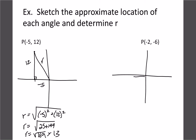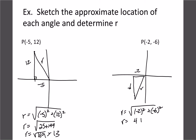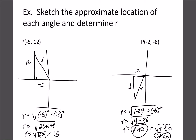Let's try another one with negative 2, negative 6. Solving for r: negative 2 squared plus negative 6 squared gives us 4 plus 36, which is root 40. We want to keep these as exact as possible, so we leave it as root 40, or simplified to 2 root 10. Either form is the most exact answer.